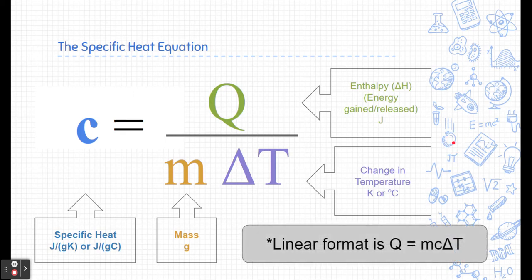Now one other way to look at this formula is Q equals mc delta T. In fact, you might see the specific heat equation listed in this arrangement because it's more of a linear arrangement. This way we're solving for the energy gained or released, and we'll use this equation later when we talk about calorimetry. But we've rearranged it this way to solve for specific heat, because that's what we're learning in this module.